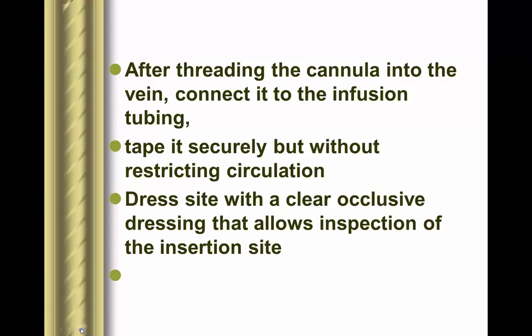After threading the cannula, either connect the infusion tubing and set the pump, or connect the hub of a venous lock and flush the site. Make sure everything you connect to the cannula has been flushed and is ready. Secure with tape, and then place a clear occlusive dressing over the site. We use clear occlusive dressing because it allows for the most accurate assessment of the site — we can see it every time we go in.